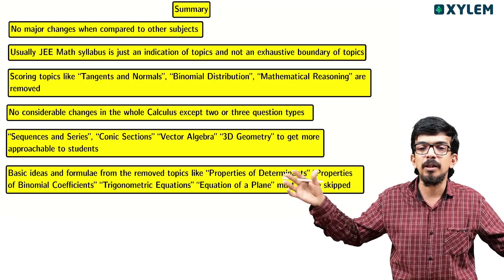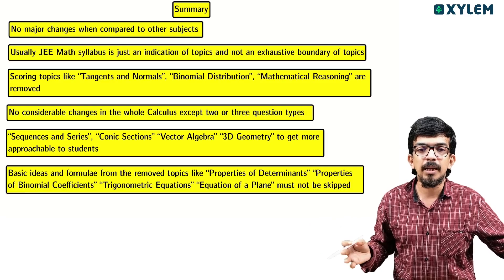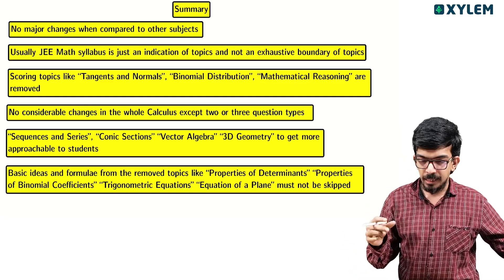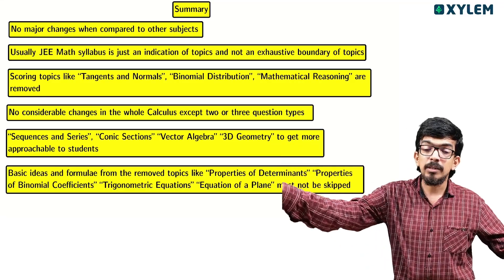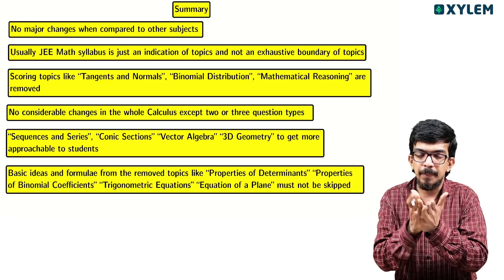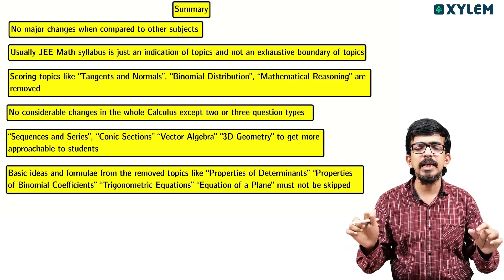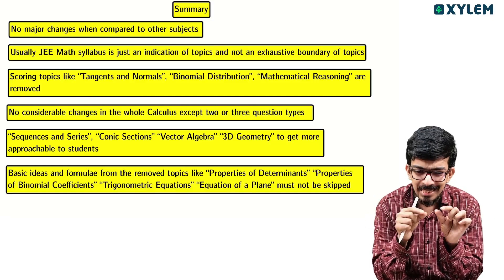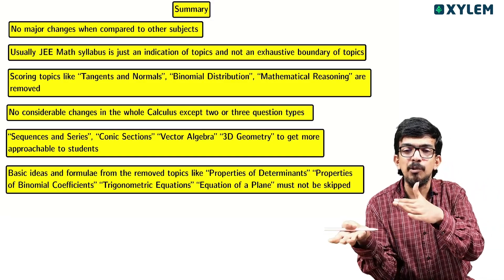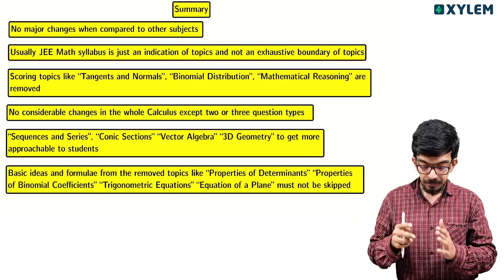We have to remove the properties of determinants and binomial coefficients — the basic ideas there. Also removed are the equation of a plane and related equations. The core topics remaining to focus on are: sequence and series, conic sections, vector algebra, and 3D geometry. You need to cover the basic formulas and basic identities for these.